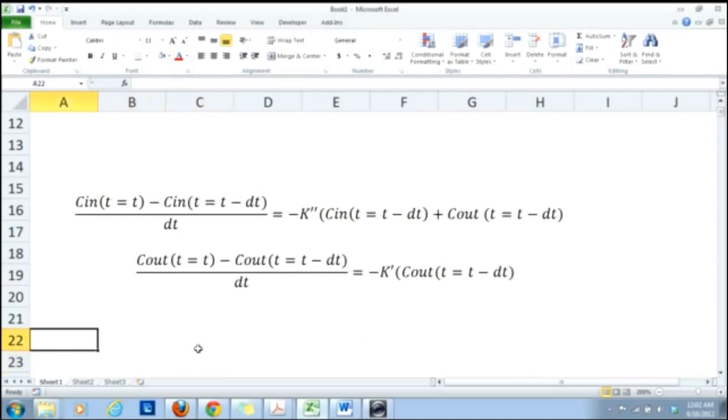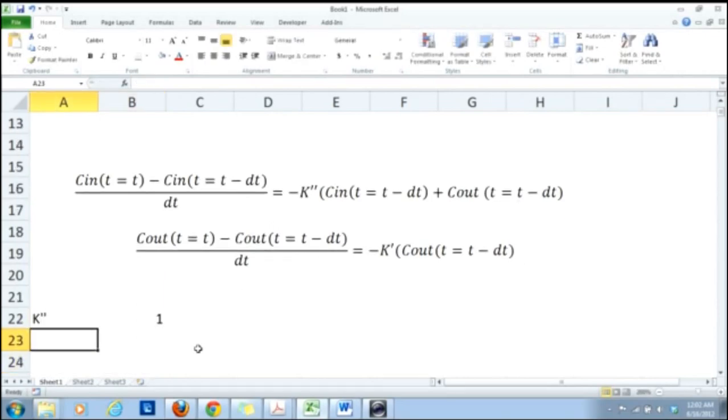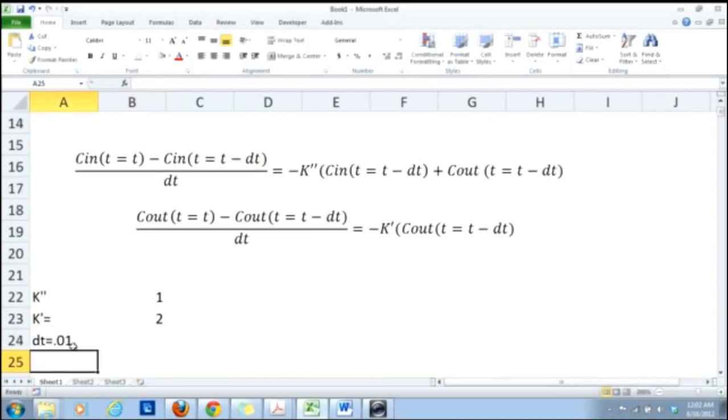Now to solve this equation I need to define k''. So let's call k'' equal to 1 and k' equal to 2. So these are arbitrary numbers you can change it later if you like. And then let's define dt and dt is equal to 0.01 here.